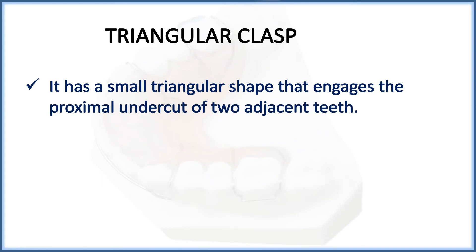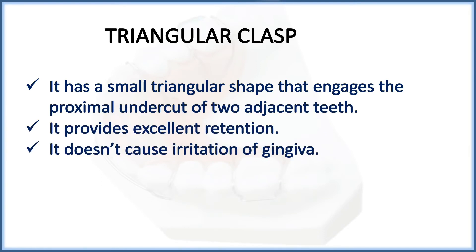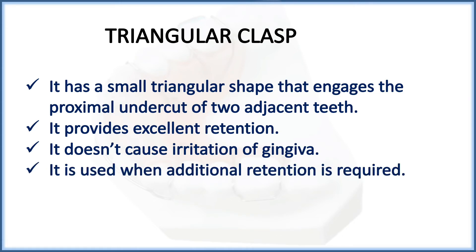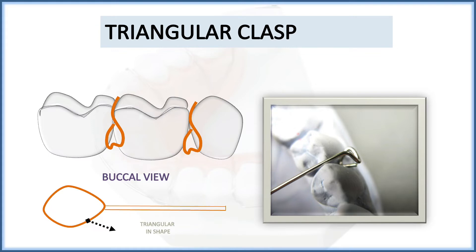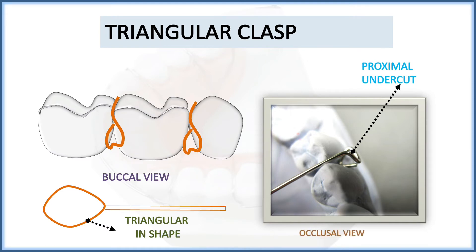The triangular clasp, as the name suggests, is triangular in shape. It has a small triangular form that engages the proximal undercut of two adjacent teeth. It provides excellent retention, does not cause irritation of the gingiva, and is used when additional retention is required. It cannot be used individually — only in association with other clasps. Looking at the figures, the buccal view shows the roughly triangular shape and how it engages the proximal undercut.